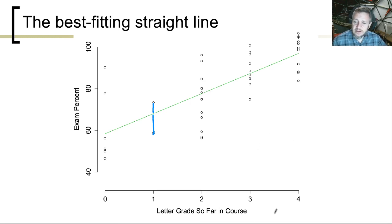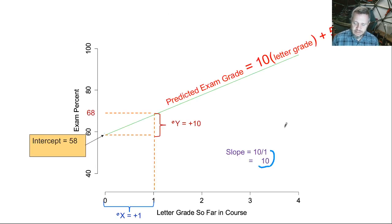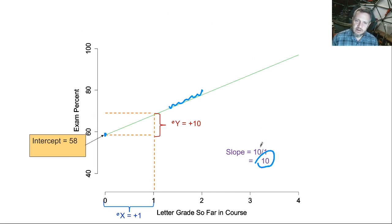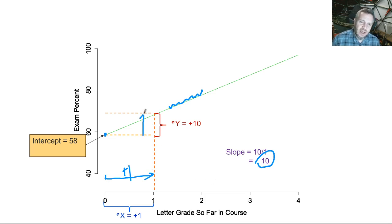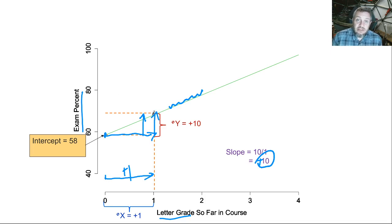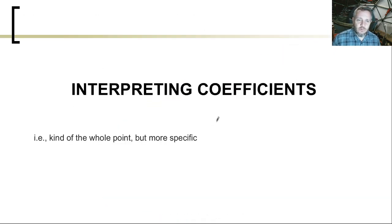The interpretation we'd make is: the slope is 10, so for every one unit increase in x — so every one letter grade increase on average — we would predict 10% higher exam scores. In other words, the model says that any time you go one unit to the right you have to go 10 units up. Since these things actually make sense — exam percent and letter grade — you can say for every one letter grade increase on average, we predict a student would on average have an increase of 10% on their exam score.